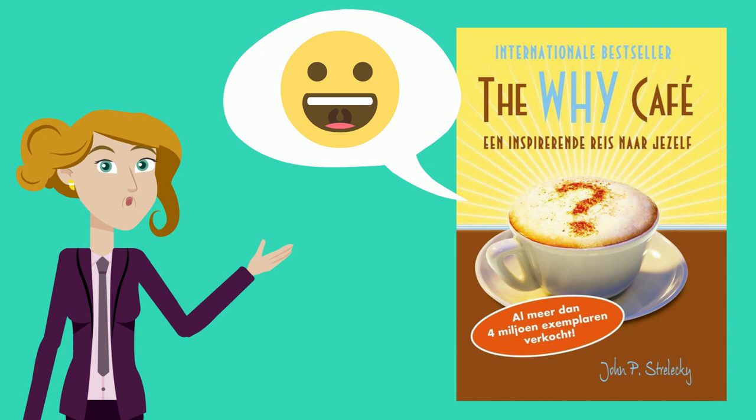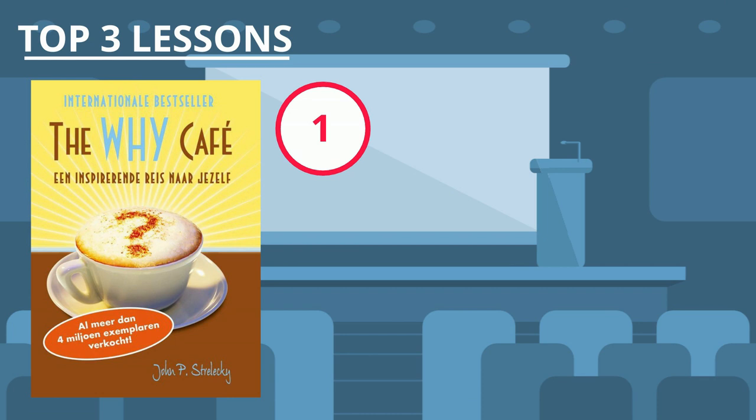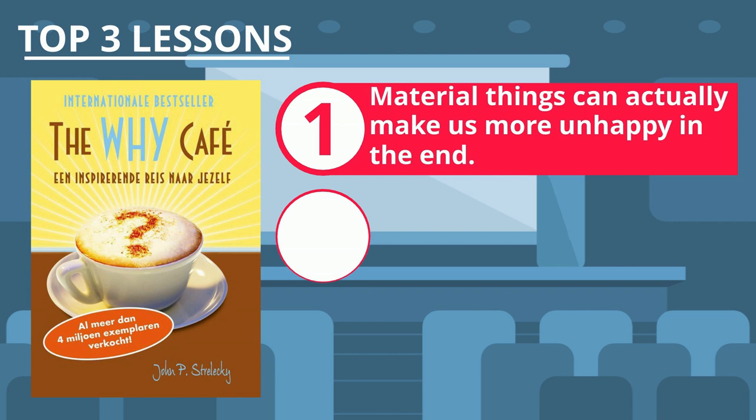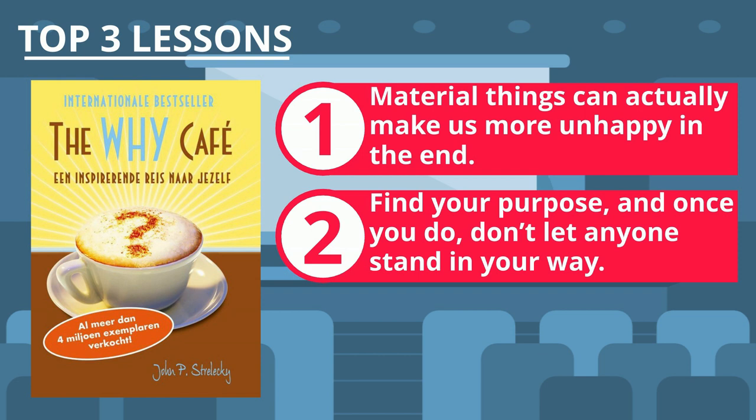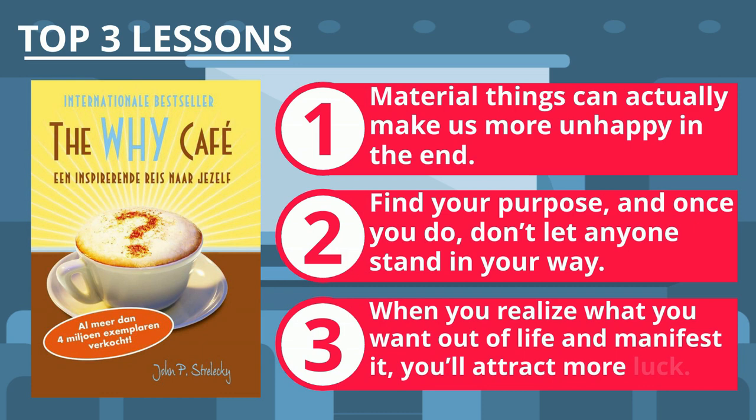Here are my three favorite lessons from the book. 1. Material things can actually make us more unhappy in the end. 2. Find your purpose and once you do, don't let anyone stand in your way. 3. When you realize what you want out of life and manifest it, you'll attract more luck. Let's explore them one by one.